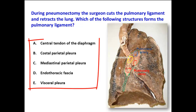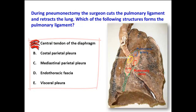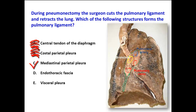So which of the following structures forms the pulmonary ligament? Central tendon of the diaphragm? No, it is not related. Costal parietal pleura? No, the costal parietal pleura is related to the ribs. It is the mediastinal parietal pleura that forms the pulmonary ligament.